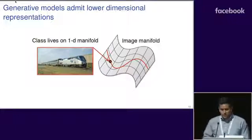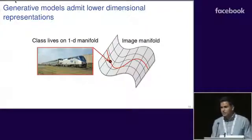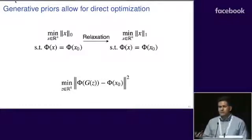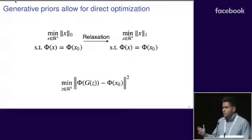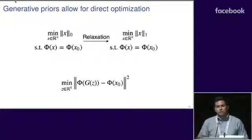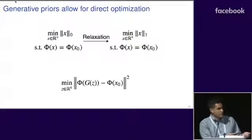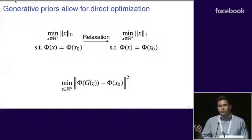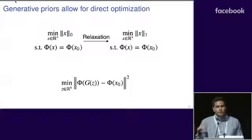In addition to having lower-dimensional representations, generative models also allow for direct optimization. To draw a comparison, for sparsity-based methods, suppose we wanted to find the sparsest solution to a linear system of equations. In this case, Φ here is a matrix. What you could do is minimize the L0 norm subject to fitting your measurements. The L0 norm counts the number of nonzero entries in your vector.